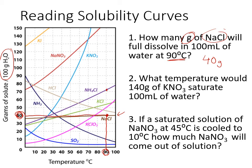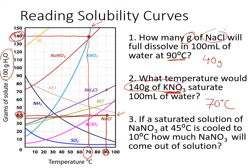Second question: at what temperature would 140 grams of potassium nitrate saturate 100 milliliters of water? We find potassium nitrate's curve — the blue one — and take 140 grams across to where it meets the curve. Reading down to the x-axis, that point is at 70°C. So at 70°C, you can dissolve exactly 140 grams of potassium nitrate in 100 mL of water for a saturated solution. Less than that would be unsaturated; more would be supersaturated.